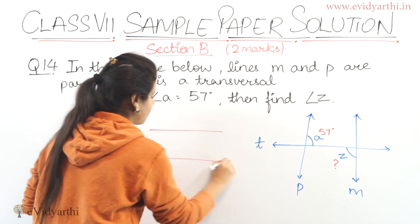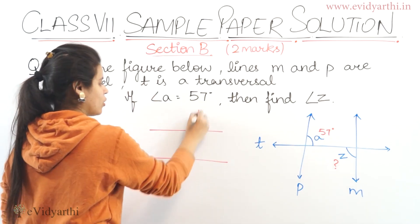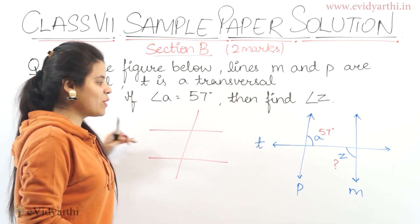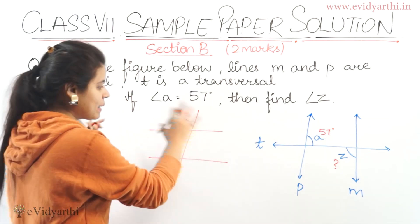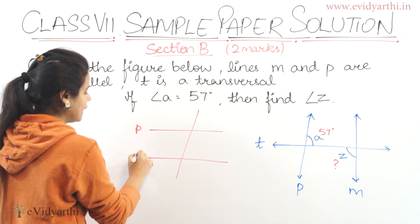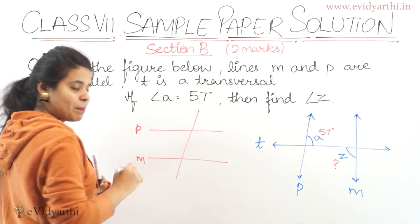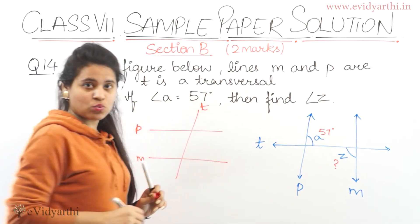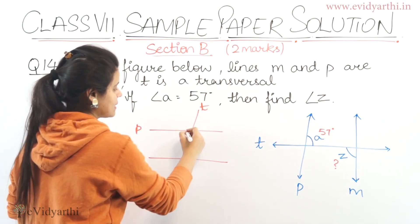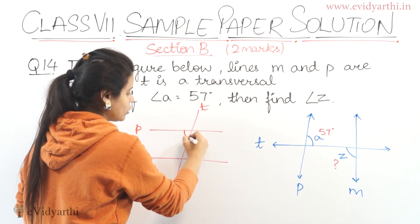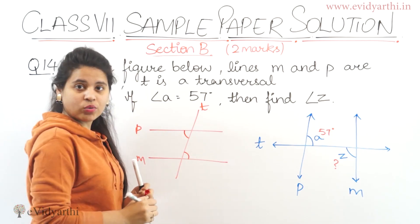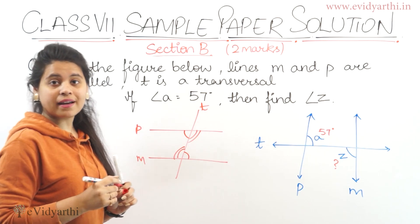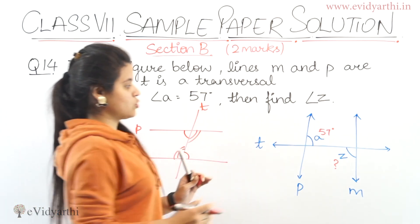What are these two parallel lines and transversal? The parallel lines are M and P, and the transversal is T. If you see the parallel lines, this angle and this angle are equal because they are alternate interior angles.